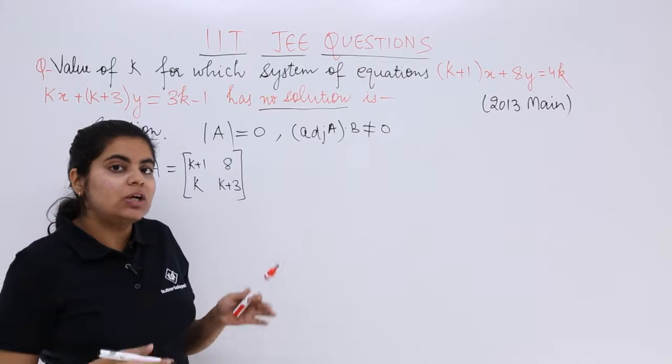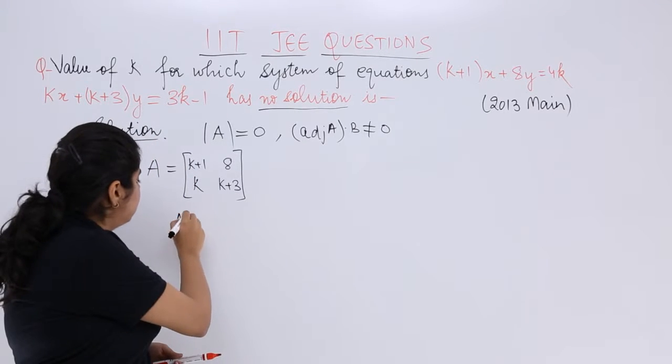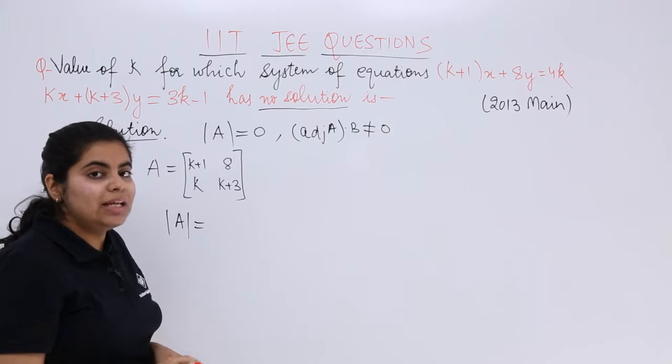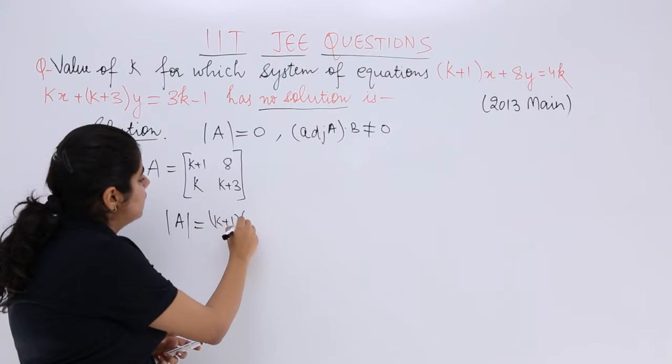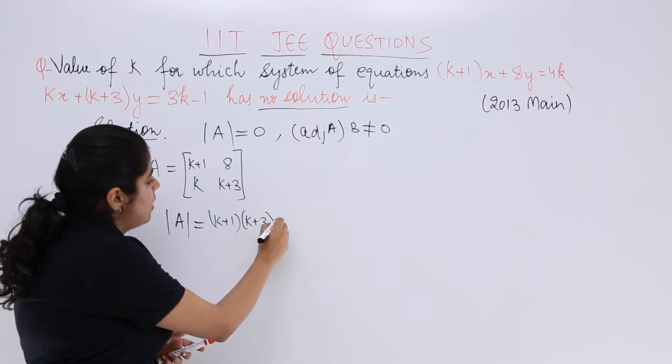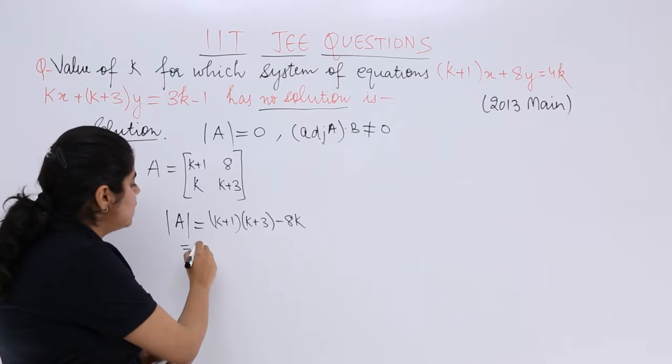Now when you know the coefficient matrix, you can write down its determinant. The determinant is calculated by cross multiplying. So it is (k+1)(k+3) minus 8k. Let us solve it.